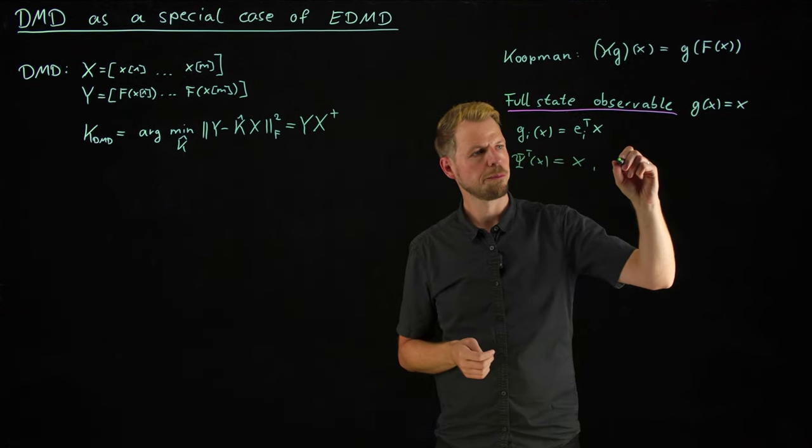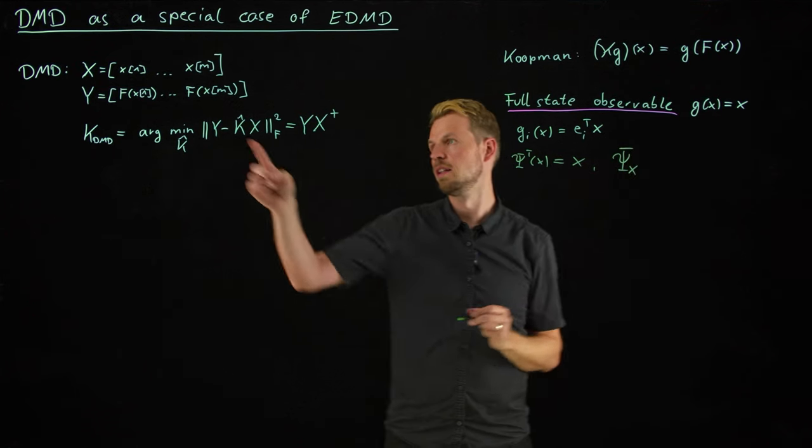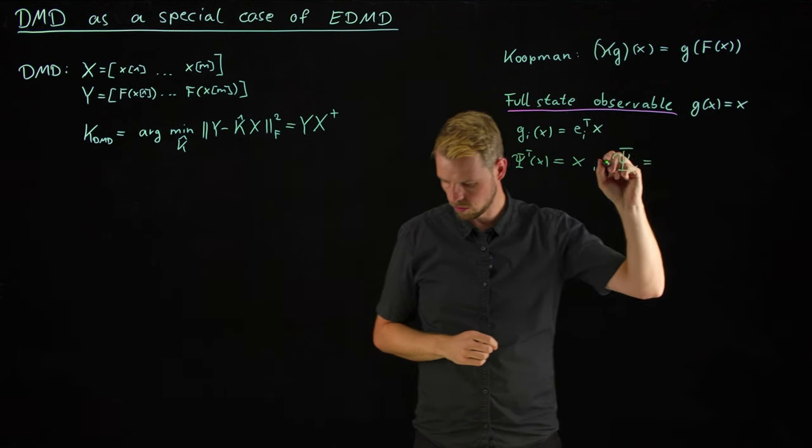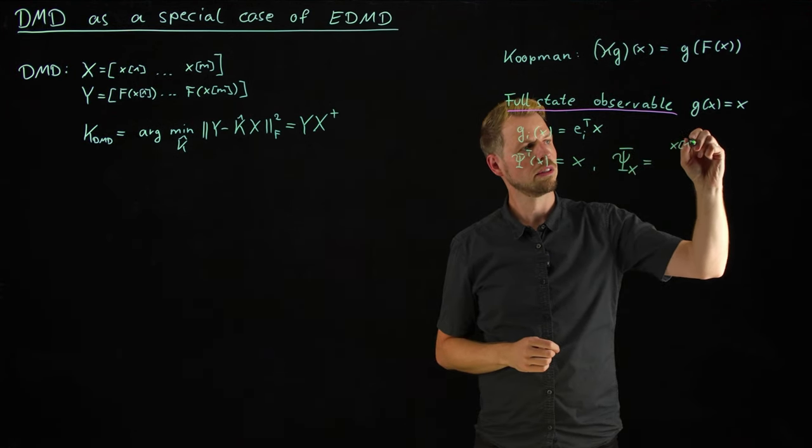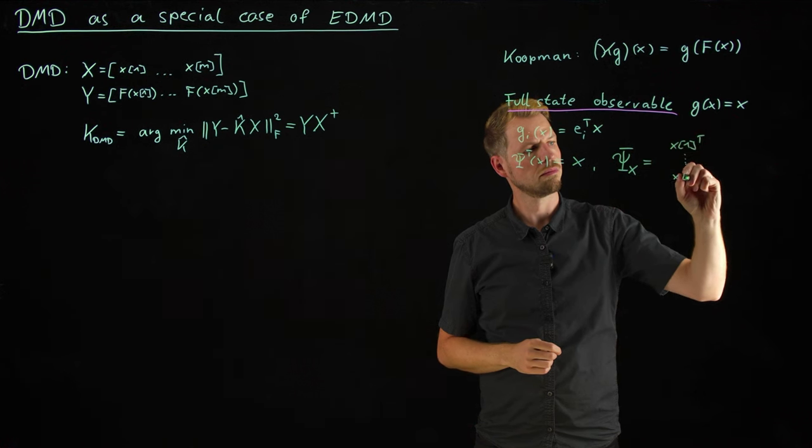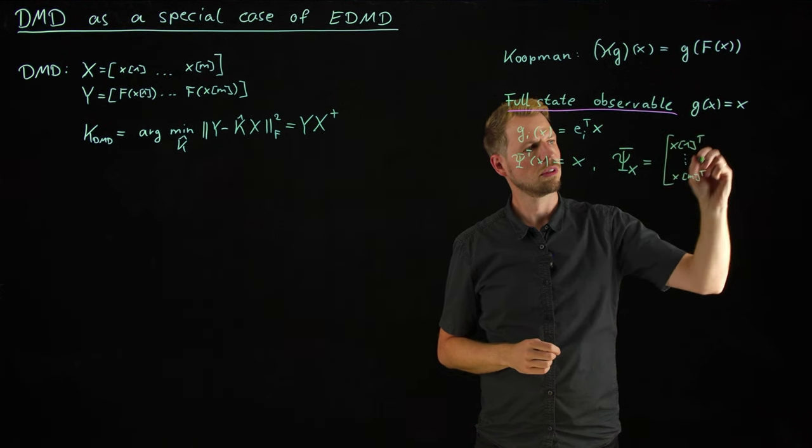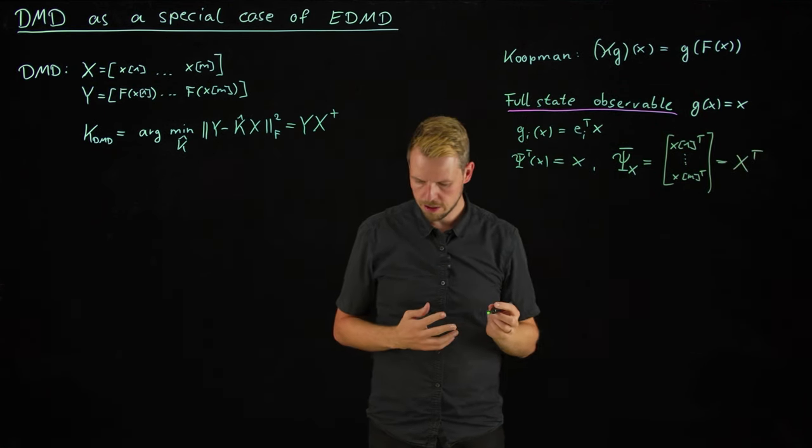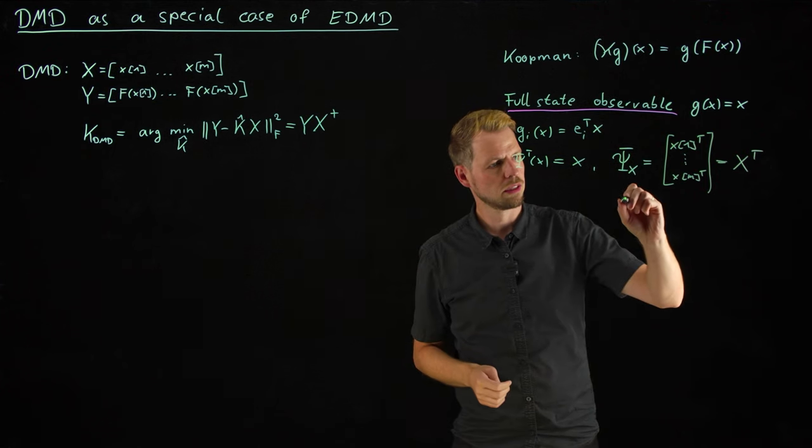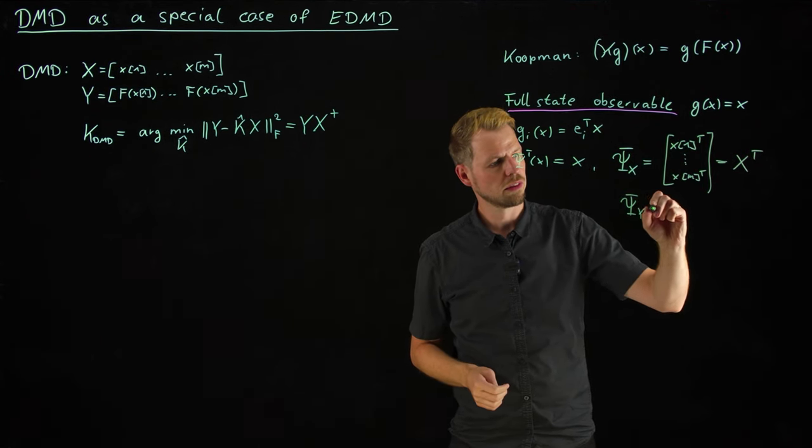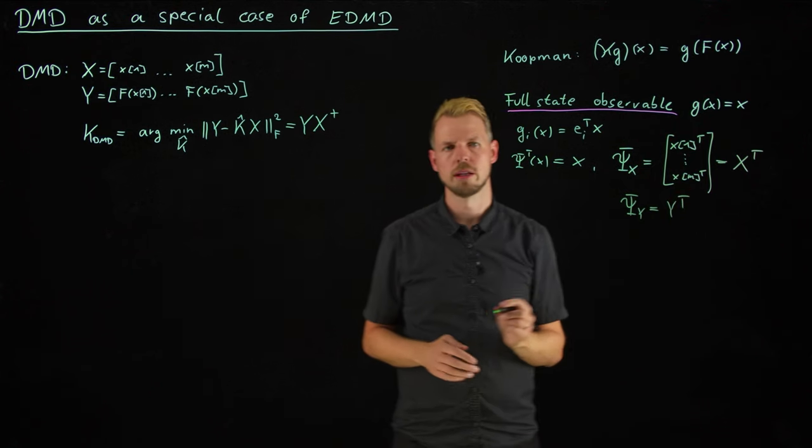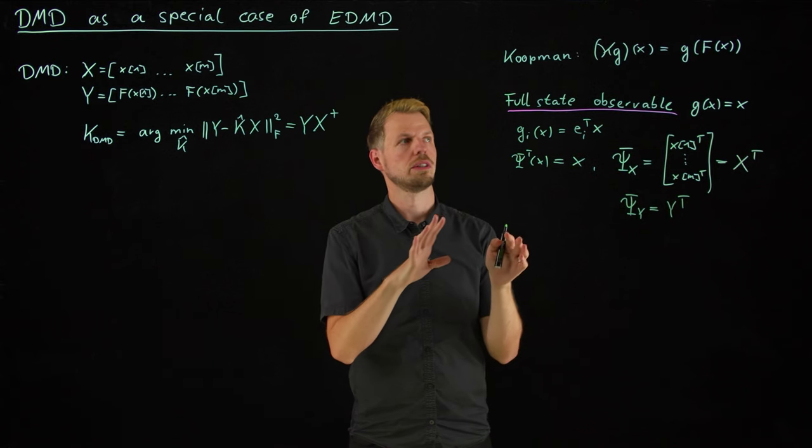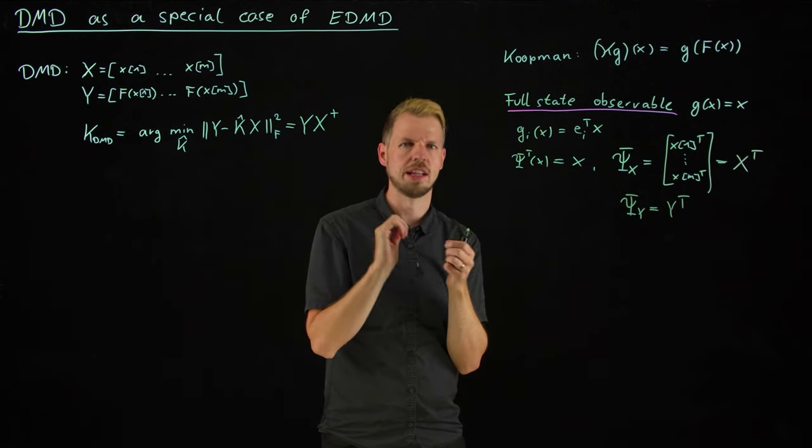And so what this means is that we simply get psi transposed of x, this was always a row vector, is simply x. Or if we lift the data, this means our data lifted by this psi gives us just x transposed. And in the same manner, psi y is also just y transposed. It's a very specific choice of a dictionary.